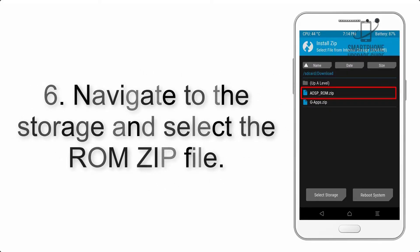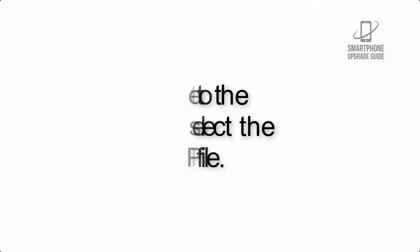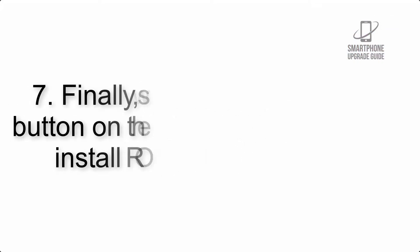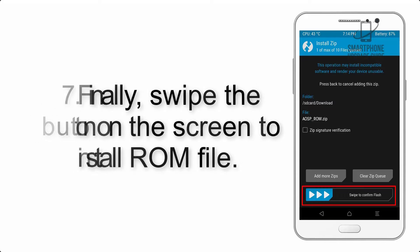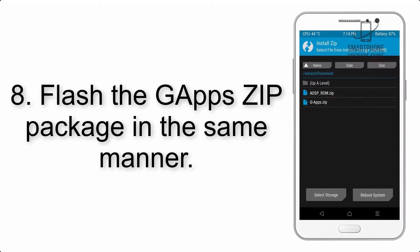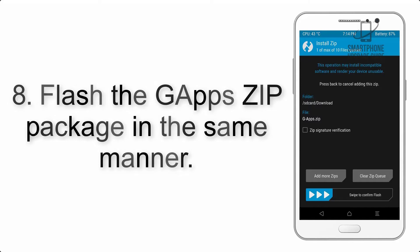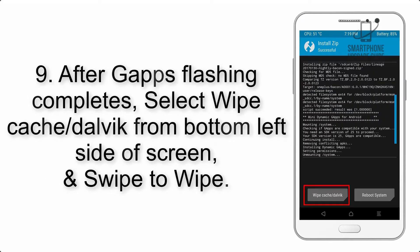Step 5: Go back to the recovery main screen and tap on the Install button. Step 6: Navigate to the storage and select the ROM zip file. Step 7: Finally, swipe the button on the screen to install the ROM file.